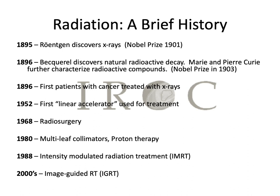In 1896, the first patients were treated with x-rays. About the 1920s was when brachytherapy started being widely used to treat accessible tumors with radium, and then in 1952, the first linear accelerator was used for treatment. Radiosurgery came online in 1968, and since then we've become even more sophisticated with the advent of CT scanners, MR scans, and have developed multi-leaf collimators and proton therapy.